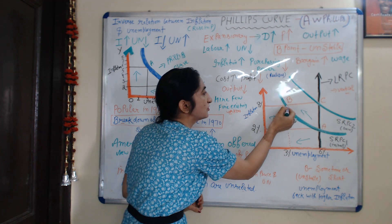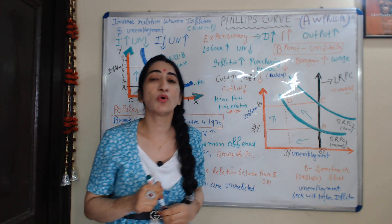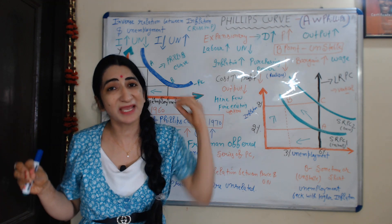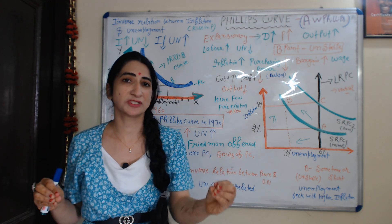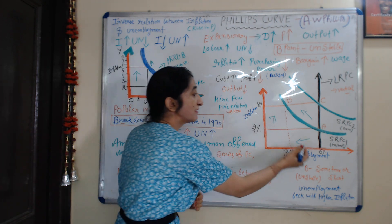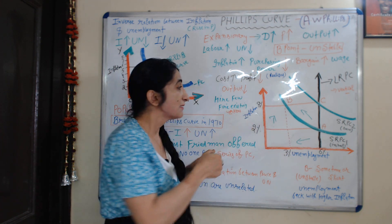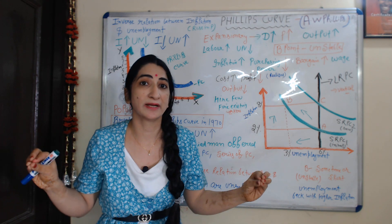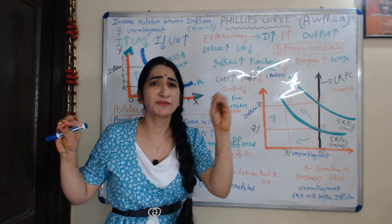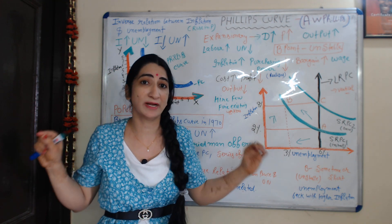Now, the economy moves from A to B point. But B point is not a stable point. As Friedman told us, in the short time period it may be possible that inflation and unemployment have an inverse relationship — as we see when inflation increases, unemployment reduces and the economy moves from A to B. But this B point is an unstable point, and the economy can only stay here for a short time period.